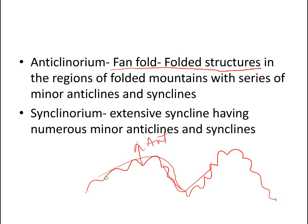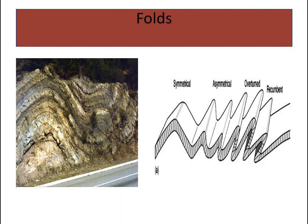It has a series of anticlines and synclines. This is synclinorium, which also has a series of folds. In a mountain fold, we can see the anticline and the synclinorium. The sides of the folds are called limbs — these are the limbs.